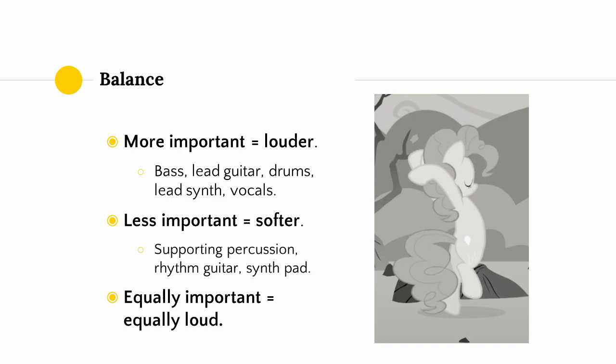Or what instruments are auxiliary — maybe things like supporting percussion, rhythm guitar, or synth pads. Instruments that we place in these roles we might want to make quieter. And within the foreground or the background, we want to make sure that there is balance between different instruments that are equally important. We want them to be perceived as equally loud.